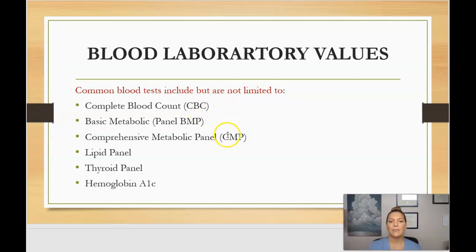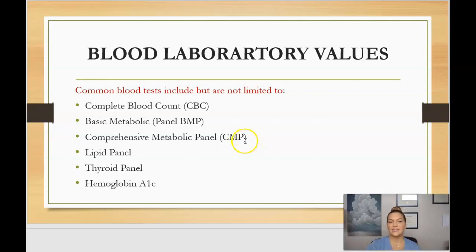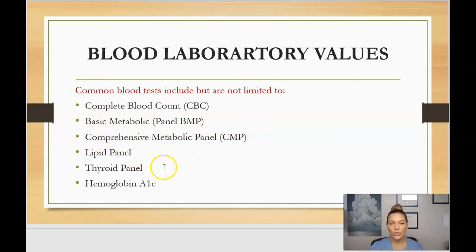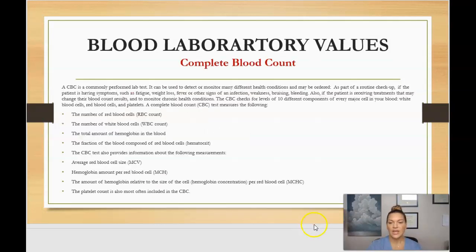The next one is the basic metabolic panel, or BMP. Then we have the comprehensive metabolic panel, or CMP — and you'll see in this presentation that the CMP actually includes everything that the BMP has, but a few more as well. Then the lipid panel, a thyroid panel, and then the hemoglobin A1c.